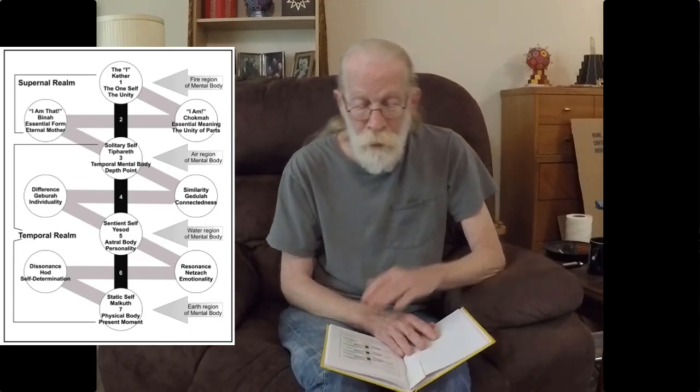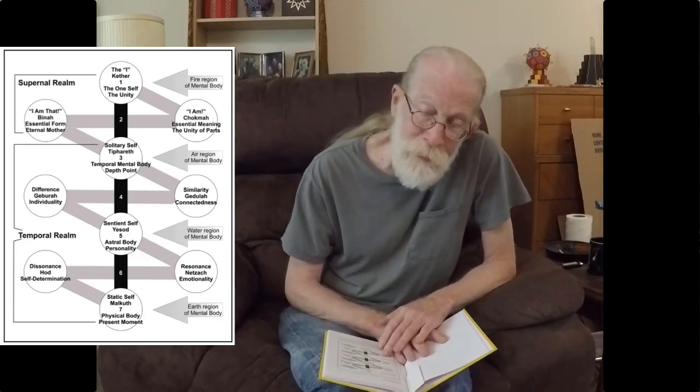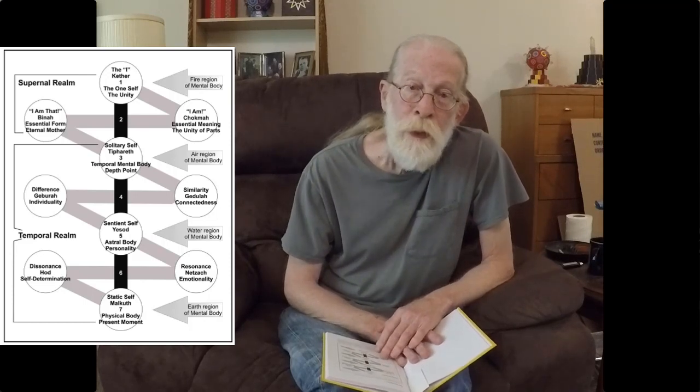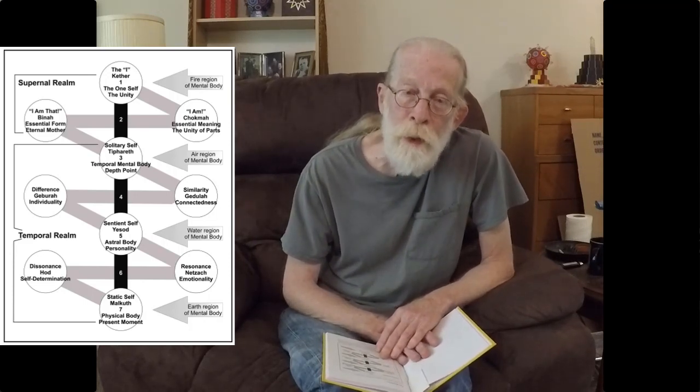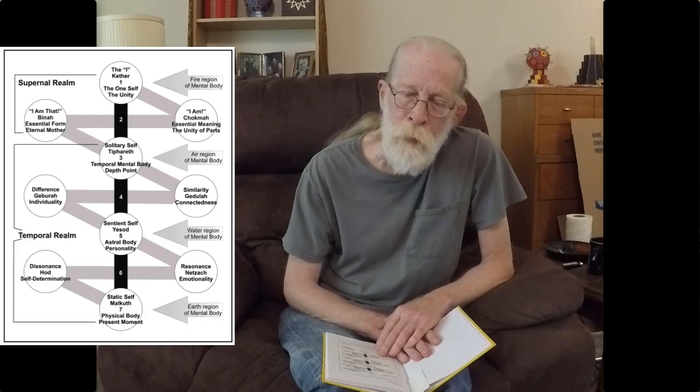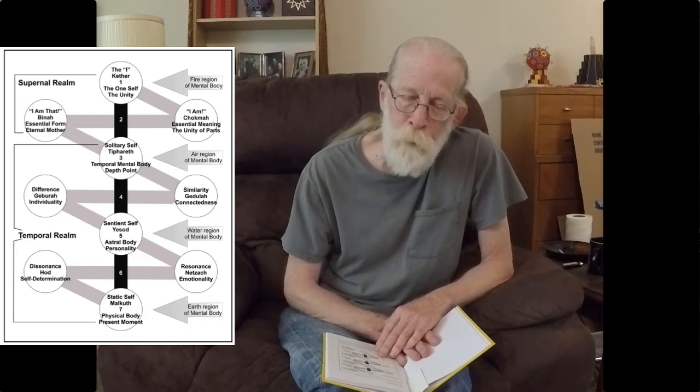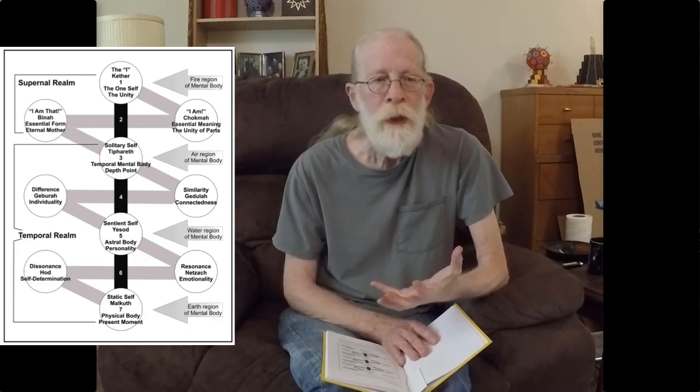After that explanation, there is a diagram. And I present it here. So this diagram is based on the Grau Tree of Life. It is the structure of the cosmos, of existence itself, and of everything that exists.